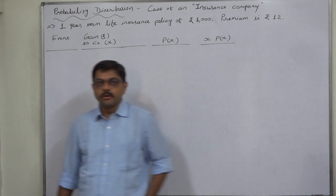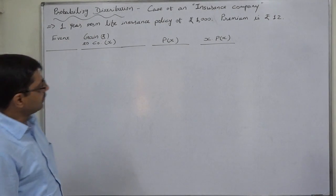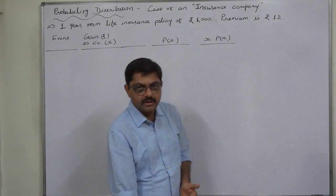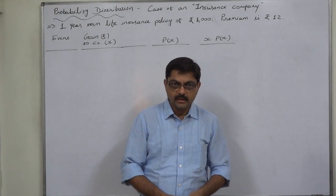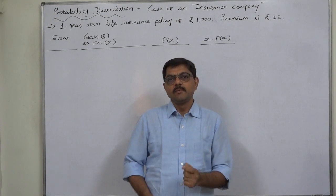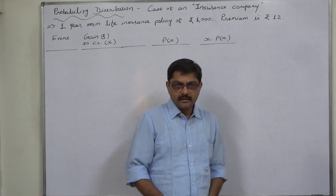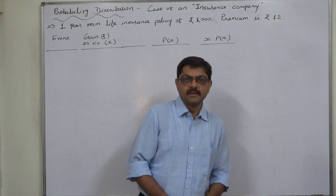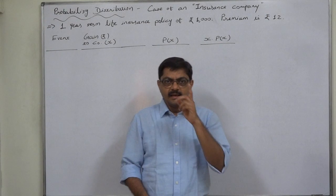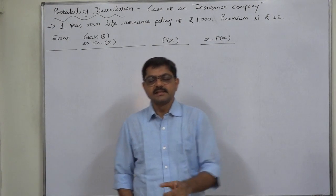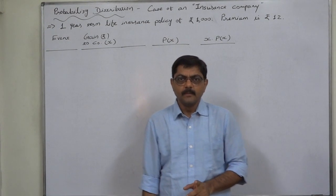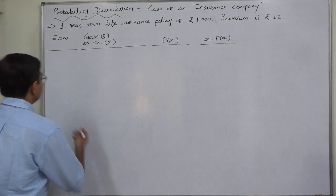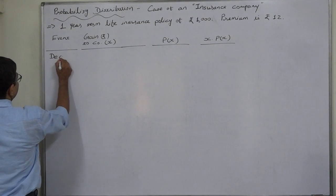There are two possibilities at the end of first year. Either during the year the policyholder dies and the company has to pay rupees 1000. In that case, what will exactly happen? The company receives premium of rupees 12 and has to pay policy amount or death claim of rupees 1000. Ultimately in this incidence or event of death, the company has to bear a loss or negative gain of rupees 988.